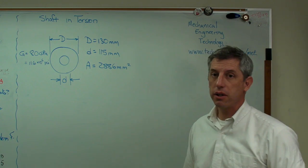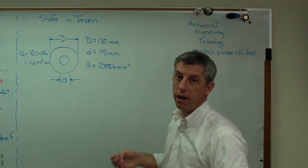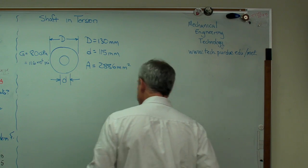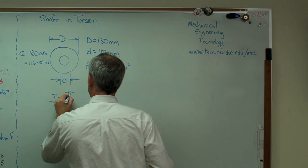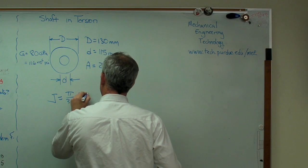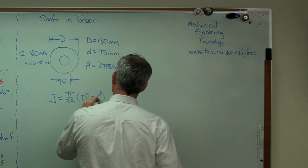So the area is actually a little smaller. This is actually going to be a little lighter. Well, when we do this, let's see, j is pi over 32, big d to the 4th minus little d to the 4th.